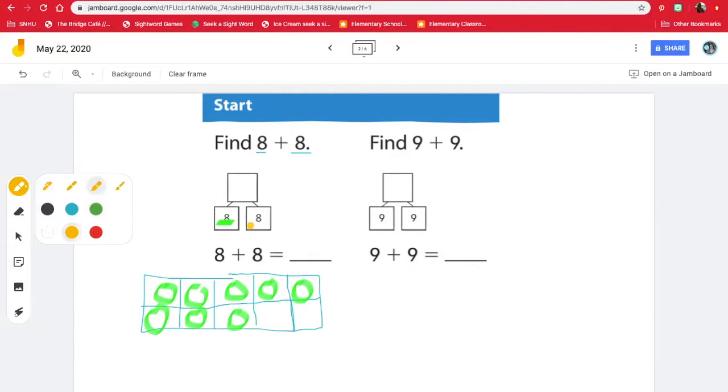Now let's use yellow to draw the other 8. Let's fill the 10 frame first. So we have 1, 2, 3, 4, 5, 6, 7, 8. So here we have one 10, because we can see here that there's 10. And how many are left over? One, two, three, four, five, six. So we have 10 and 6.